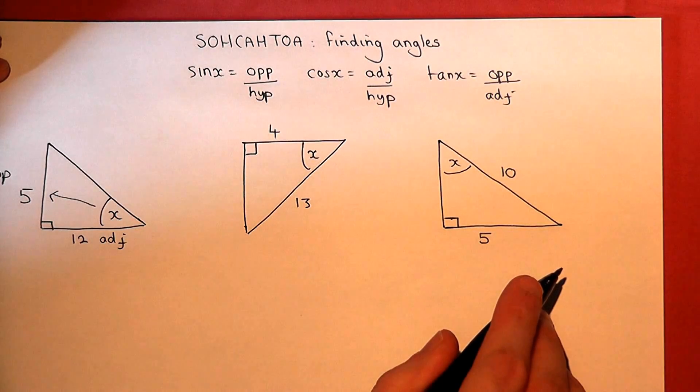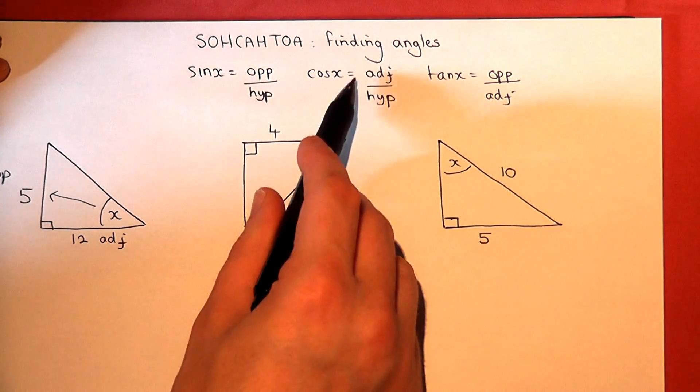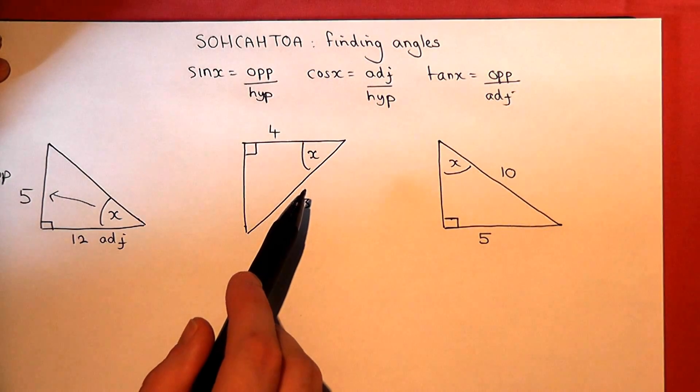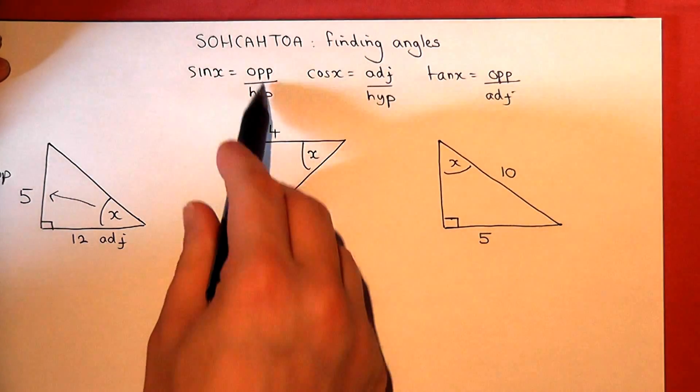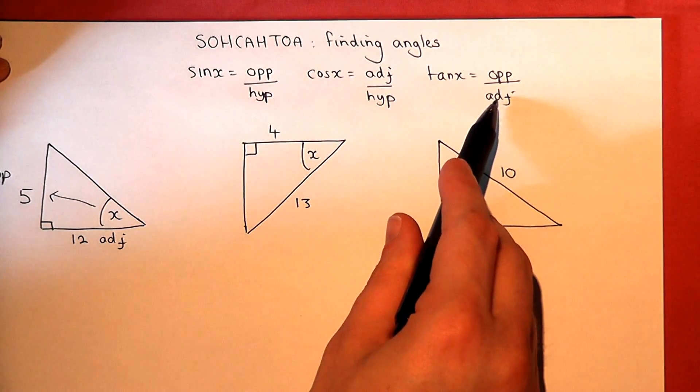Right then, we then identify which of the SOHCAHTOA equations to use. Now, we know the opposite and the adjacent, so we use the tan equation.